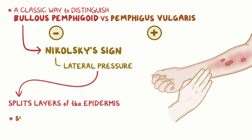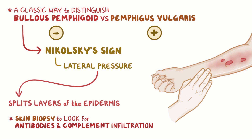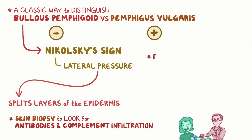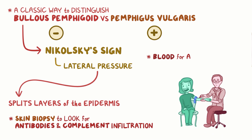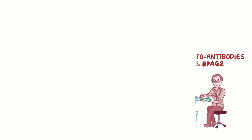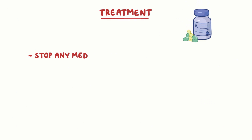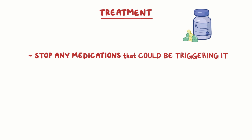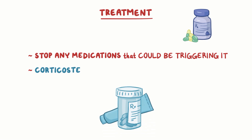A skin biopsy can be done to look for evidence of antibodies and complement infiltration into the skin. The blood can also be checked for autoantibodies against BPAG1 and BPAG2. Bullous pemphigoid is most commonly treated by stopping any medications that could be triggering it, and by using corticosteroids.